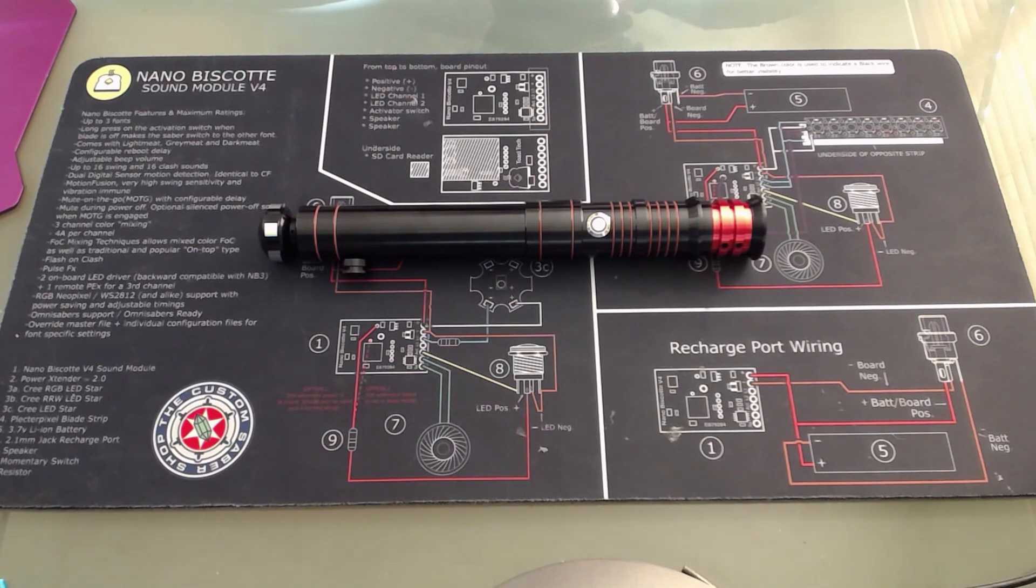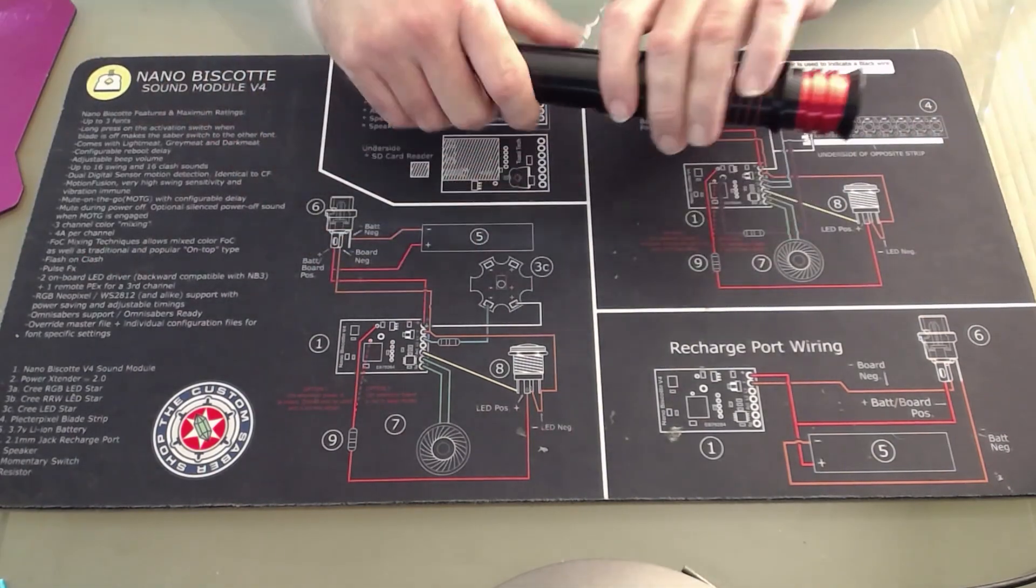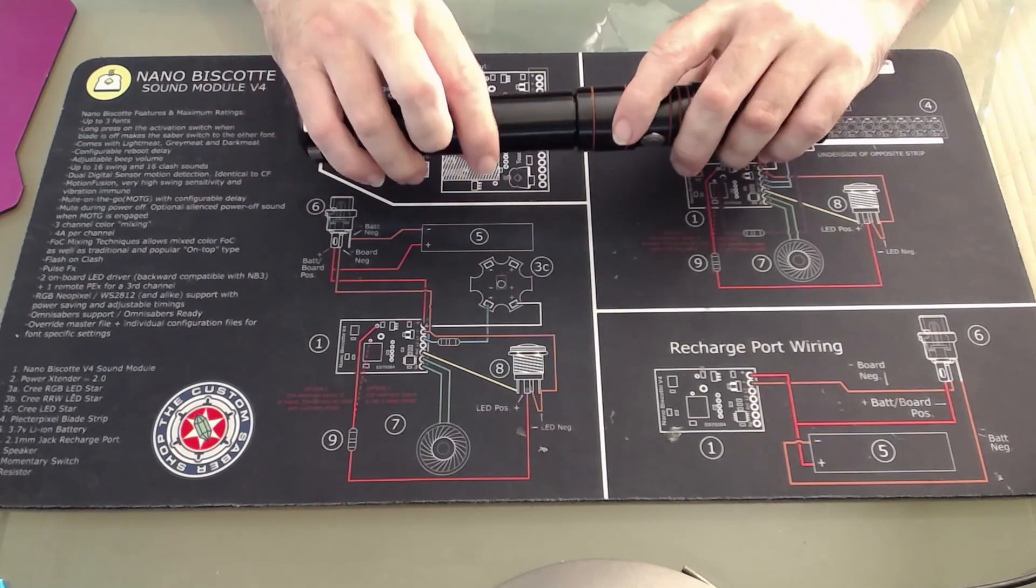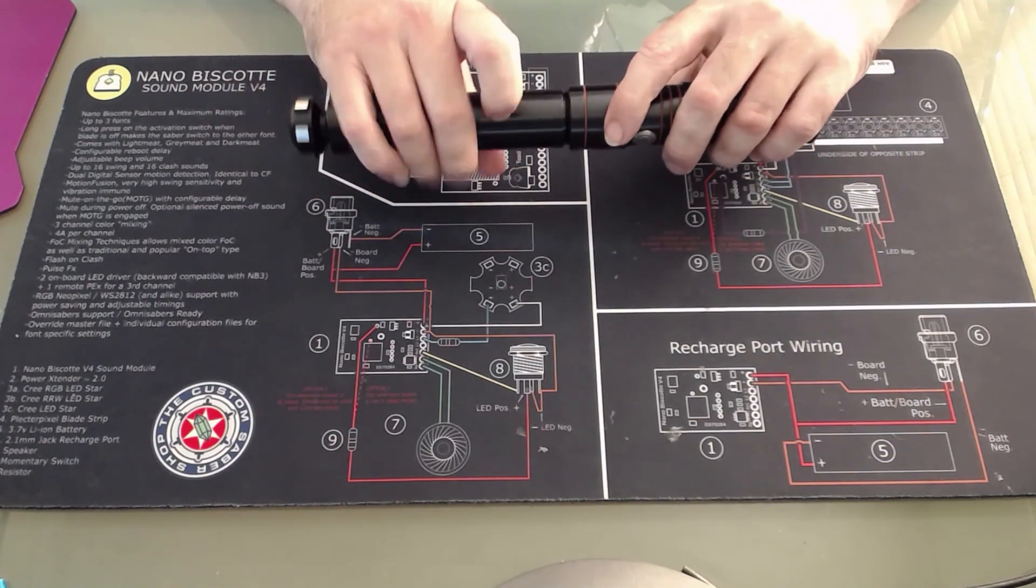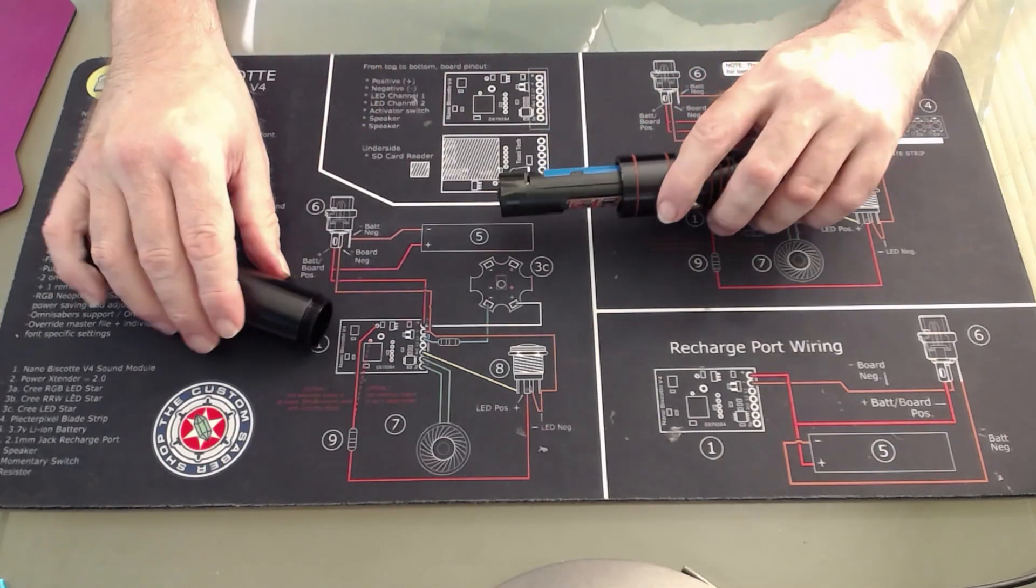Now your saber has an internal charging port which you use to charge your saber. In order to access it, you simply unscrew, in most cases, the handle of the saber like so and simply slide it off the main body.